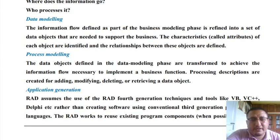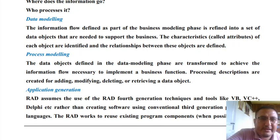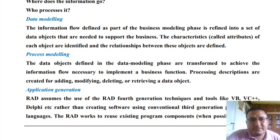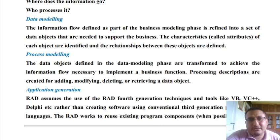Once the Business Modeling Phase is over and a shared understanding has been achieved, we initiate the Data Modeling Phase. In the Data Modeling Phase, the information flow identified during business modeling is transformed into a set of identifiable objects or entities. The objective is to identify all objects participating in realizing the business. Once the objects have been identified, it is important to identify the attributes and behaviors related to those objects, and then establish relationships between them, because realizing a business requires both participation and relationships among objects.